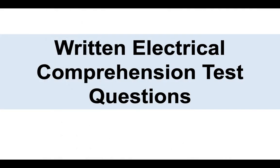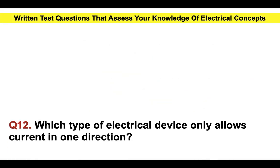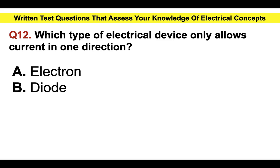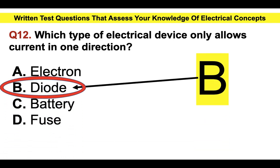Let's move on to written electrical comprehension test questions. Question twelve: which type of electrical device only allows current in one direction? A, electron; B, diode; C, battery; or D, fuse. The correct answer is diode. The only way that you will get good at these is to practice lots of them, because there's only a specific number of questions that can be asked.